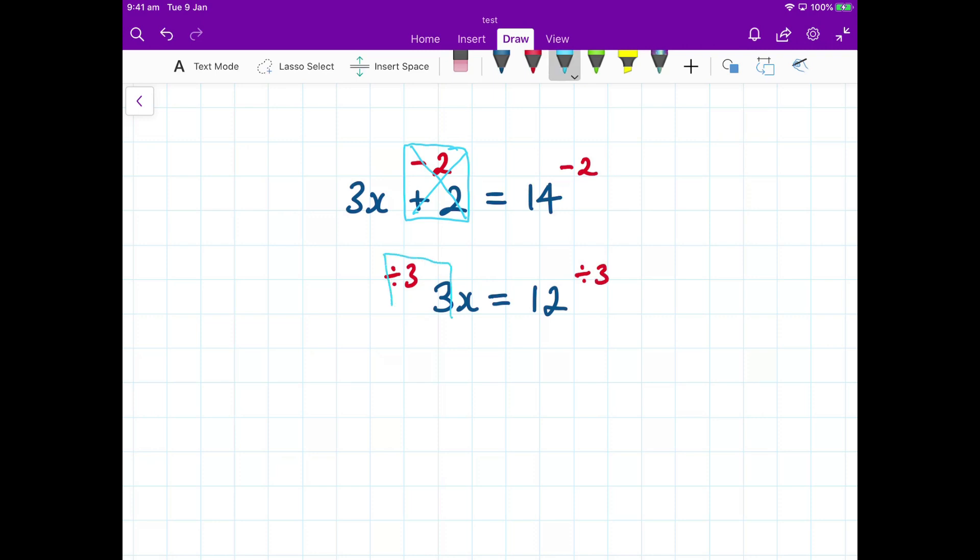Now these 3s, well again, they're going to cancel. So what I'm left with on the left hand side is the x. And we've got the equals. And the 12 divided by 3. Well, 12 divided by 3 is 4. Now that's the answer we were expecting. We can always check. 3 multiplied by 4 is 12 plus the 2 is 14. We knew that.